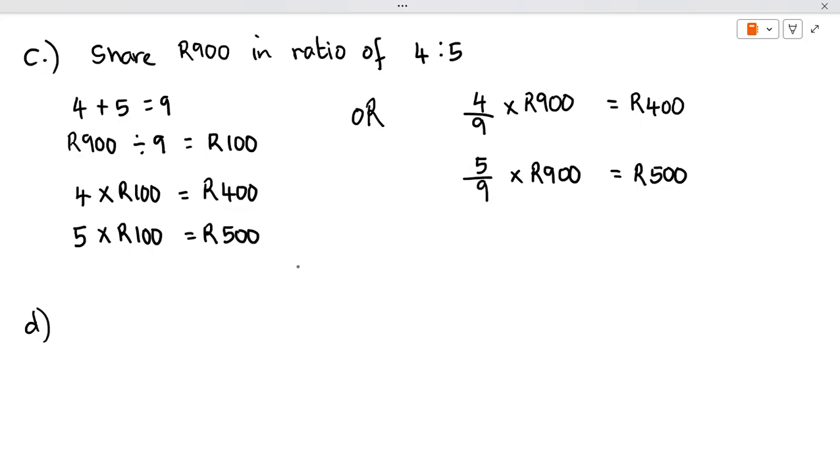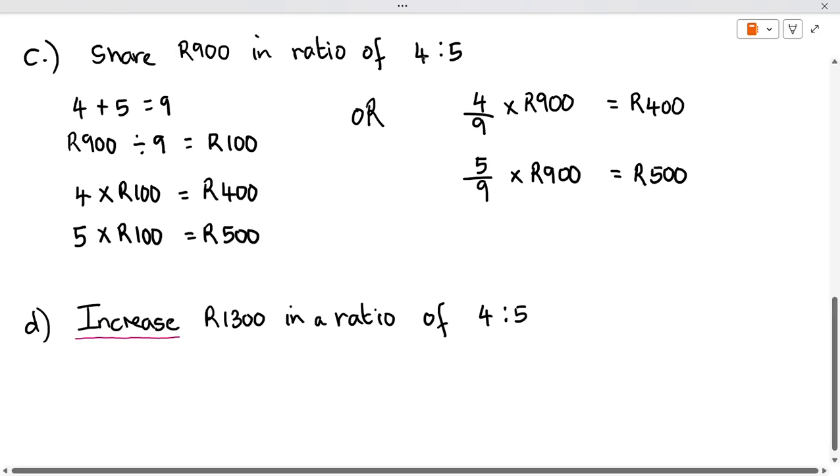Let's look at another one. D, I want to talk about increase and decrease. Here, if you increase, let's say we increase 1,300 in a ratio of 4 to 5. So we're increasing it. When we're increasing it, there's two ways you could do it. But the best way to remember is when we talk about increase, you are going to take the ratio and write the bigger number above. So basically, it's just going to be 5 over 4 times 1,300.